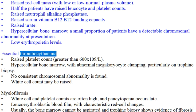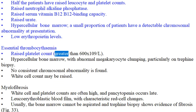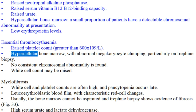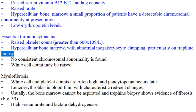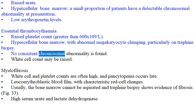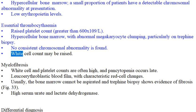Essential thrombocythemia investigations: Raised platelet count, greater than 600×10⁹/L. Hypercellular bone marrow with abnormal megakaryocyte clumping, particularly on trephine biopsy. No consistent chromosomal abnormality is found. White cell count may be raised.